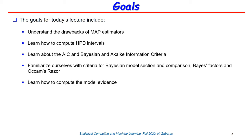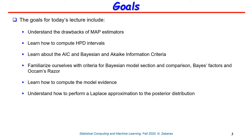A principle that effectively says the best models are the simplest models that explain the data. I am going to remind you how we compute model evidence. And finally, I am going to give you an extremely important approximation of the posterior of the parameters — an approximation that will give us a Gaussian to represent the complicated posterior even in high dimensions. So the Laplace approximation will be a Gaussian approximation for the posterior, which may allow us to do computations including the predictive distribution analytically.